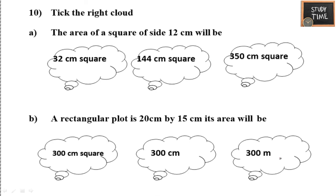Tick the right answer. First: the area of a square of side 12 cm = 12 into 12 = 144 square centimeters. Second: a rectangular plot of 20 cm by 15 cm — its area = 20 into 15 = 300 square centimeters.